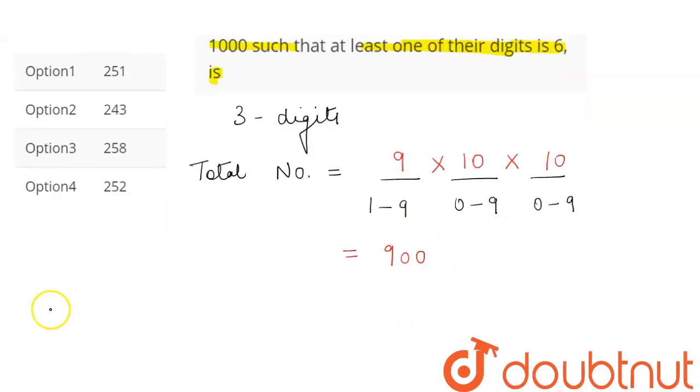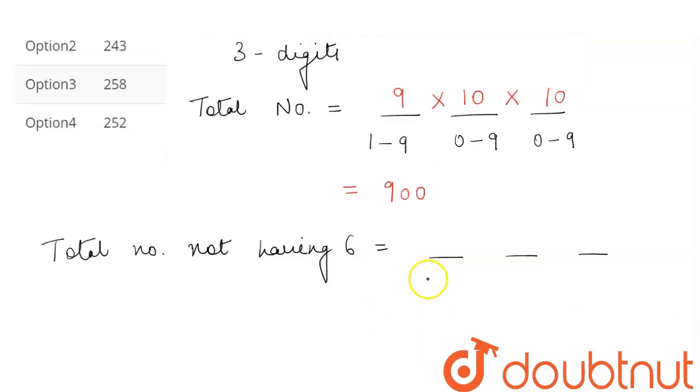Now secondly, we will find the total numbers which do not have 6 in them. So again we will have a three digit number. In the first case we cannot have zero, so we will have from 1 to 9 and here 6 is not included.